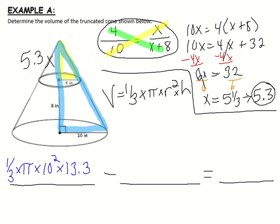And then we're subtracting. Now find the volume of the small cone. So you have 1/3 times pi times the radius squared. The radius is 4, so you have 4 squared times the height, which is 5.3.